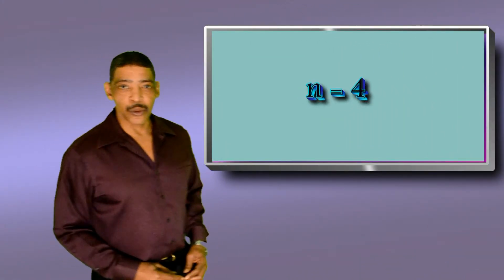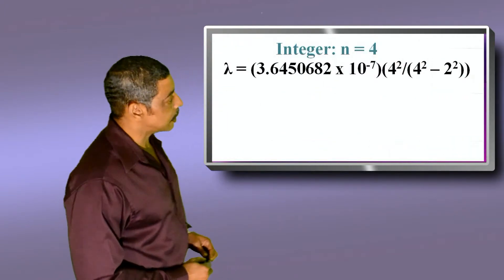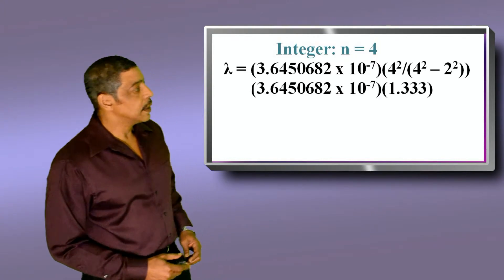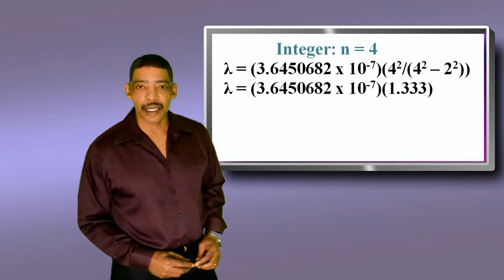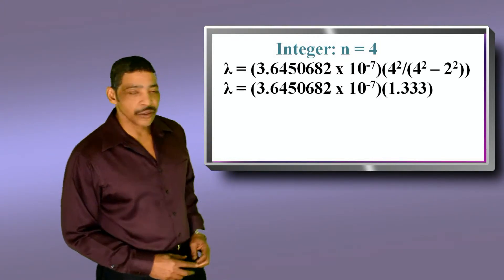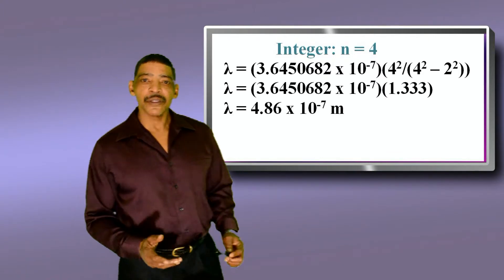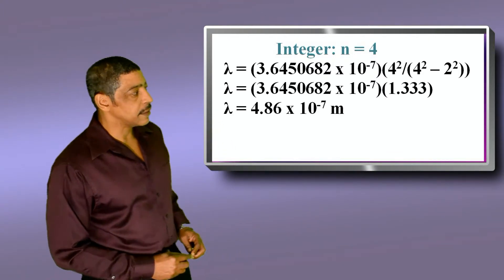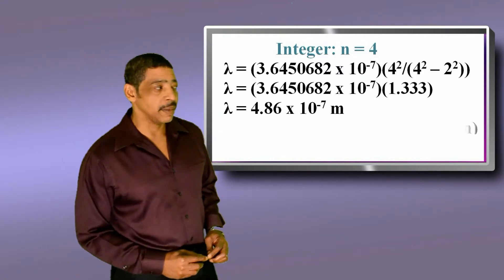For n equals 4, the wavelength will equal Balmer's constant times 4-squared divided by 4-squared minus 2-squared. This equals Balmer's constant times 1.333. Balmer's constant times 1.333 is equal to 4.86 times 10 to the minus 7 meter.